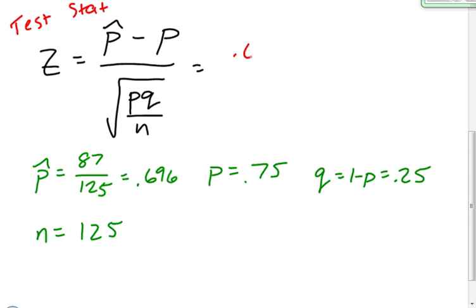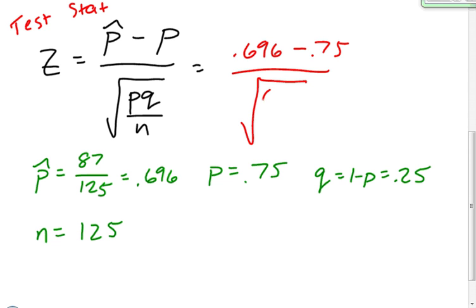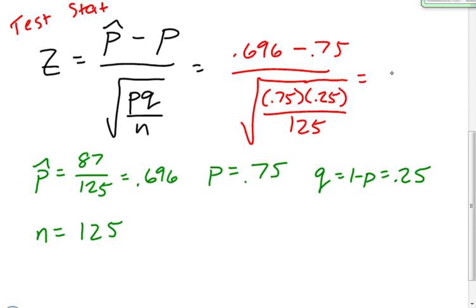This would be 0.696 minus 0.75 divided by the square root of 0.75 times 0.25 divided by the sample size, which is 125. The numerator gives negative 0.054, and when I do everything in the denominator I get 0.0387. When I divide those two, I get a test statistic of negative 1.39.